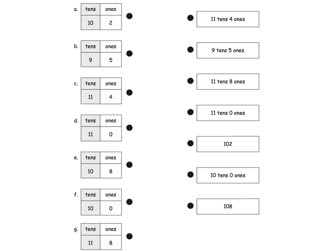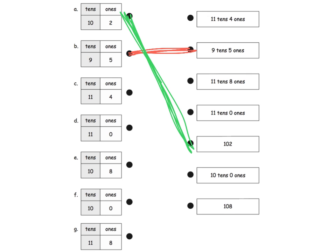Now here — this is beautiful. Students need to just match. They could go either direction: start here and find the match on the right, or start on the right and find the match on the left — or both. How beautiful is that! I see 9 tens, 5 ones — 9 tens, 5 ones. Boom, that's a quickie, I'm just going to connect those. How about 10 tens, 2 ones? We learned that 10 tens is 100, so we have 102. So where do we see 102? Right here — let's connect that. Boom.